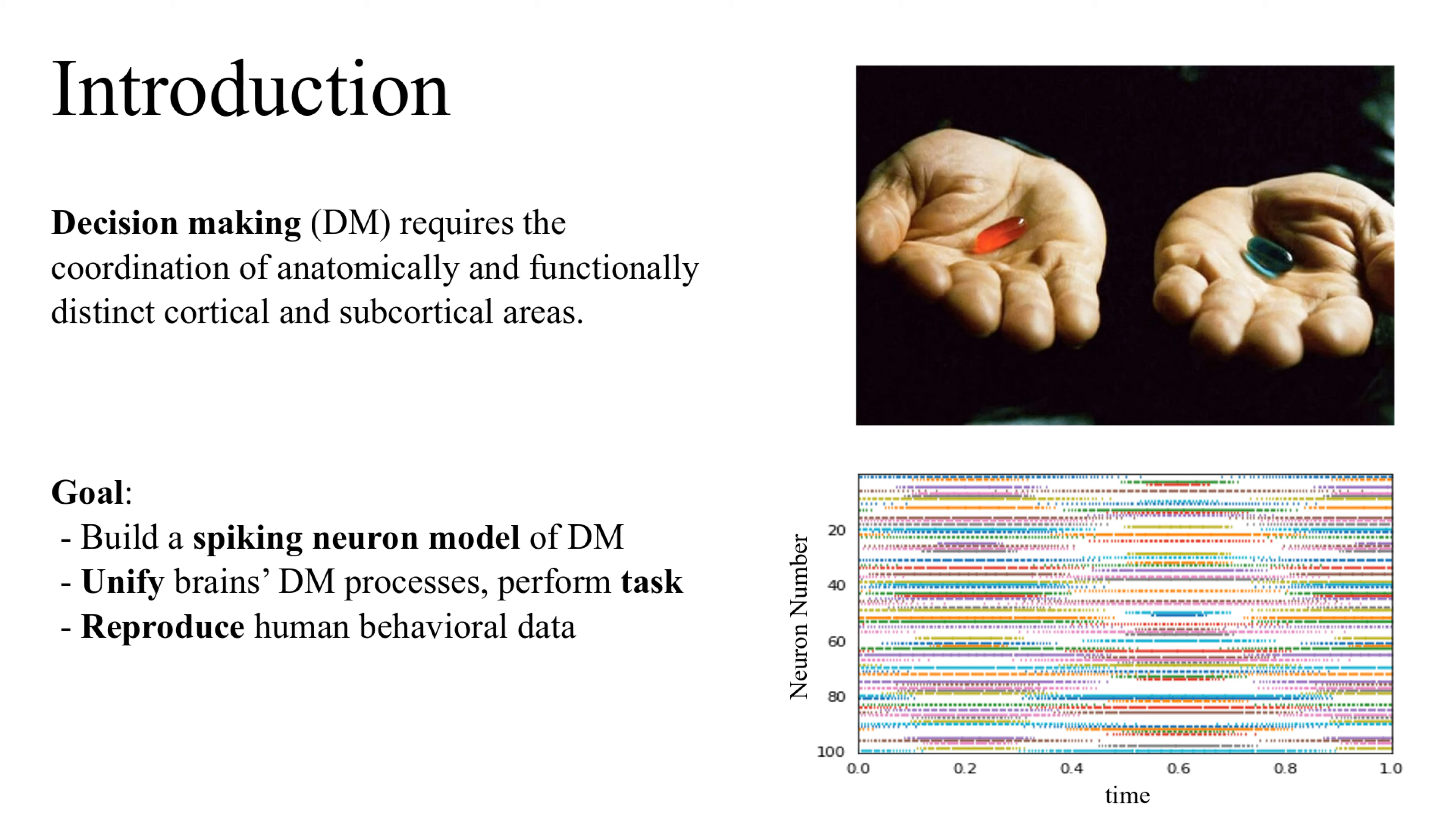Decision-making is a complex process that involves numerous brain areas and cognitive operations. While neuroscience and cognitive science have studied these areas and processes in isolation, unifying models are needed to understand decision-making holistically. Our goal is to build an anatomically accurate spiking neuron model that performs a decision-making task and reproduces human behavioral data.